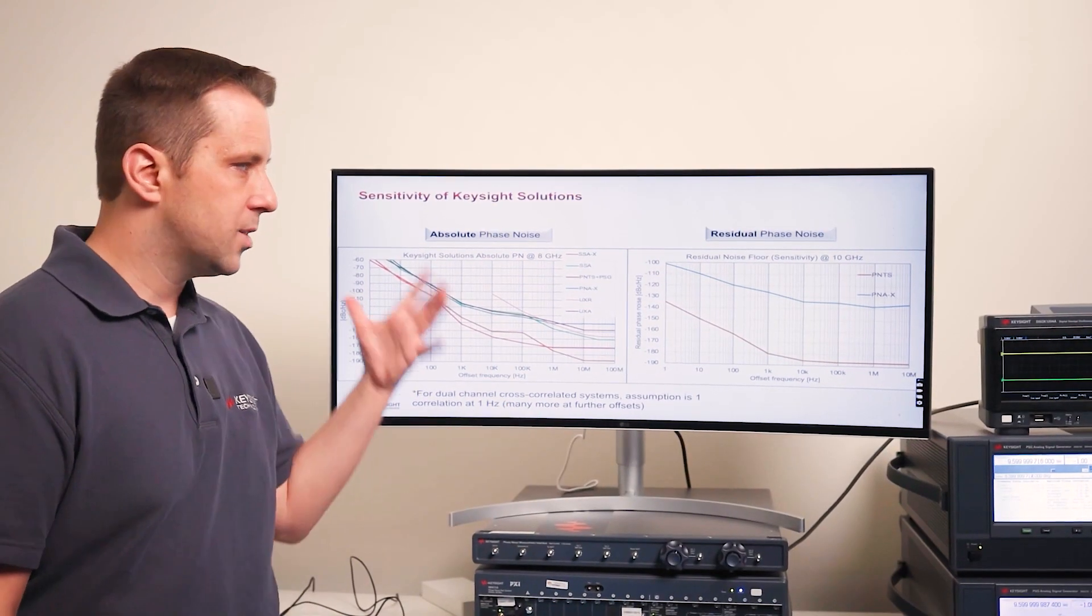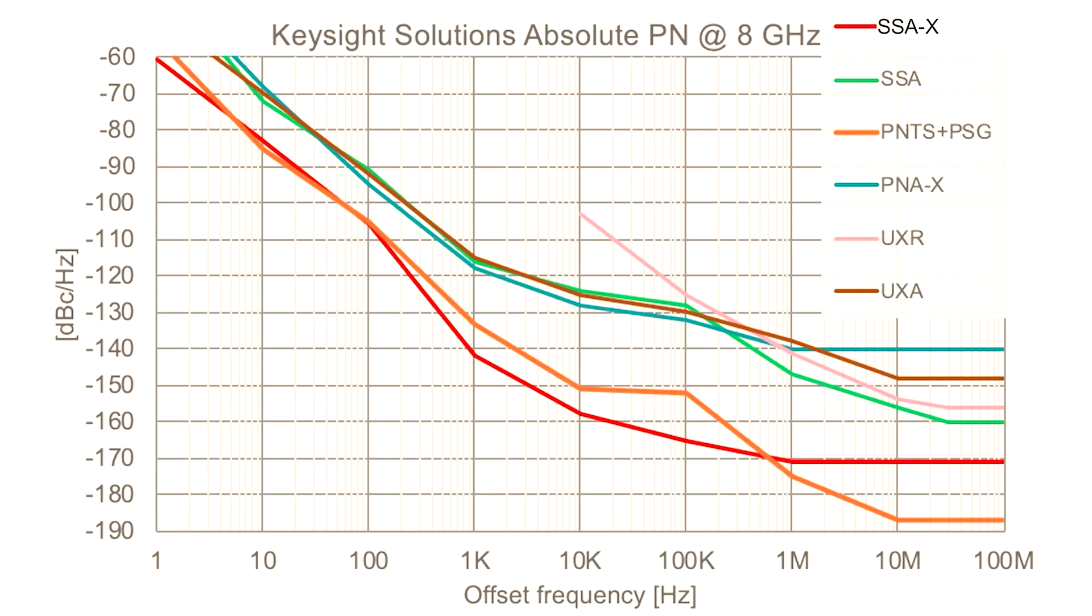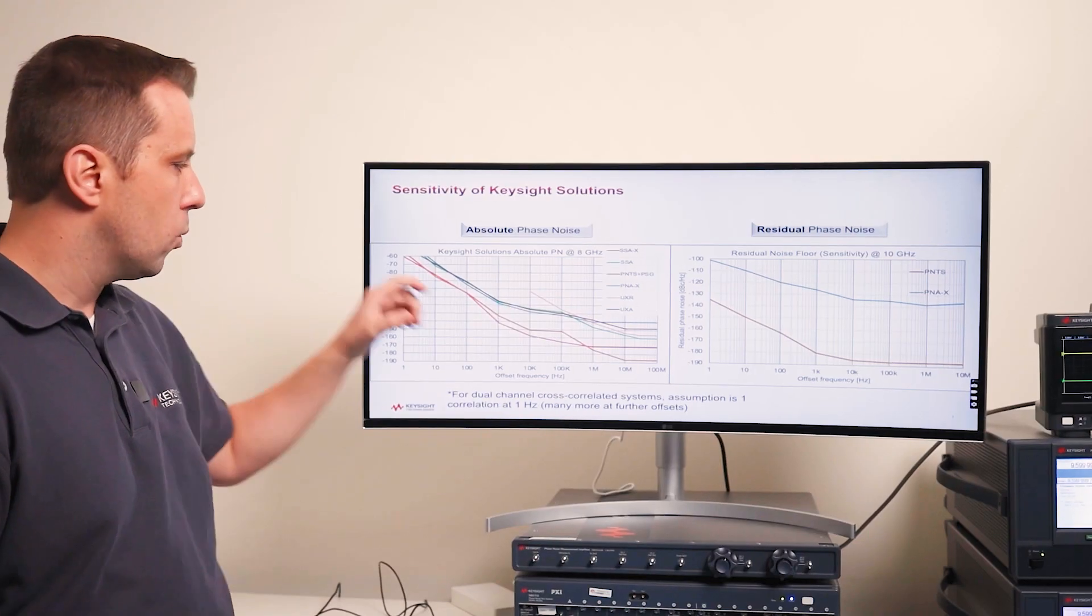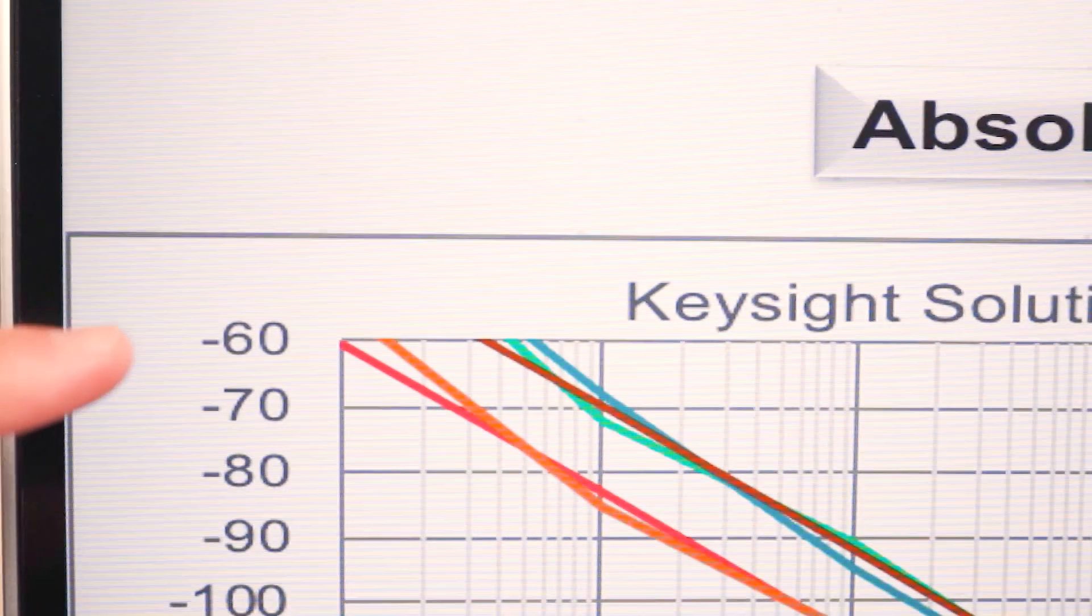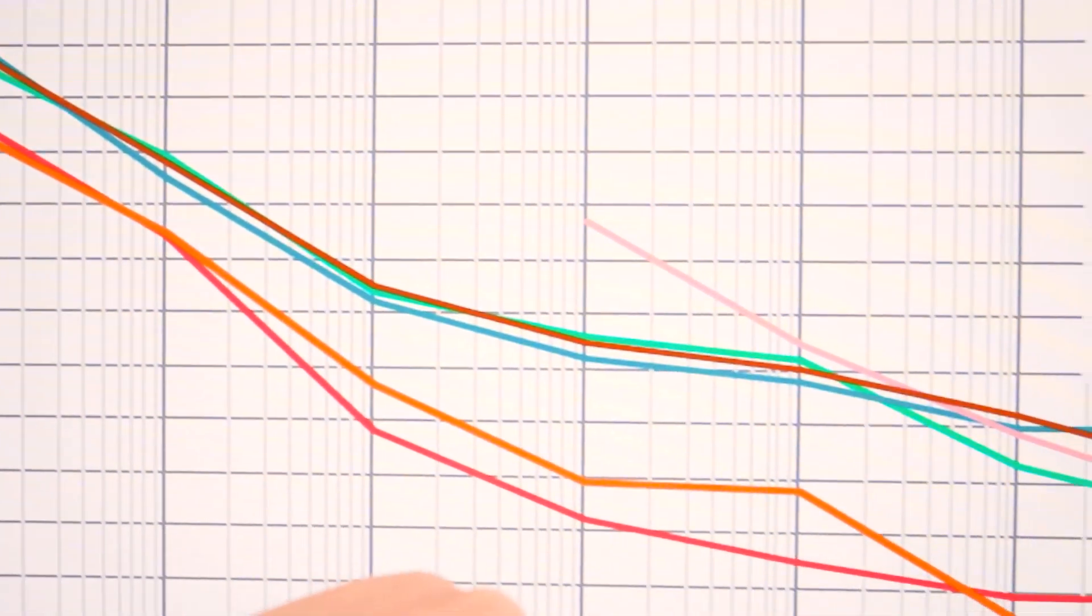In terms of absolute sensitivity, there are six different solutions in the Keysight portfolio that measure absolute phase noise. The newest member is called the SSAX, and that's the red trace here. In this case, lowest is better. The assumption is that we've done one correlation at one hertz offset.